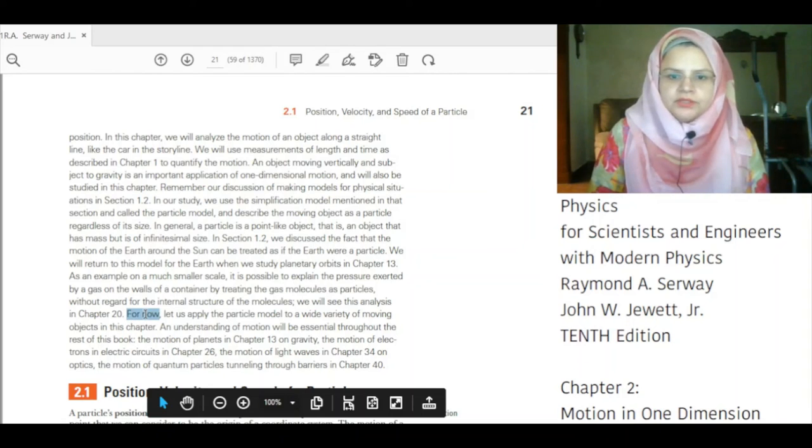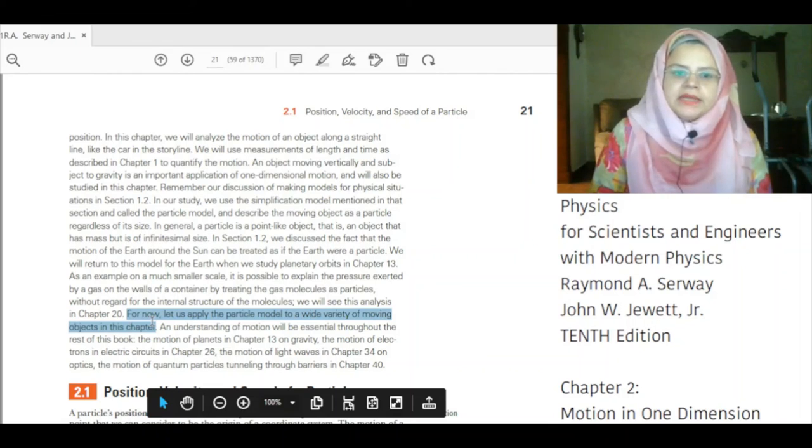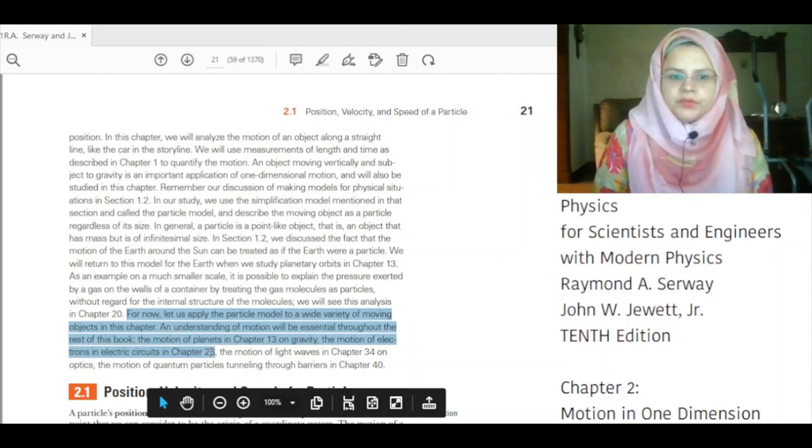For now, let us apply the particle model to a wide variety of moving objects in this chapter. An understanding of motion will be essential throughout the rest of the book: the motion of the planets in chapter 13 on gravity, the motion of electrons in an electric circuit in chapter 26, the motion of light waves in chapter 34 on optics, the motion of quantum particles tunneling through the barrier in chapter 40.